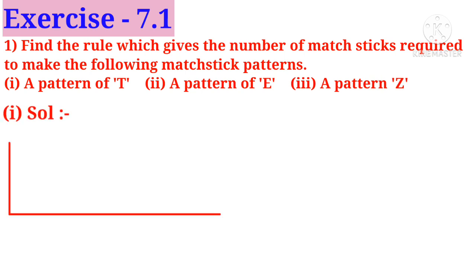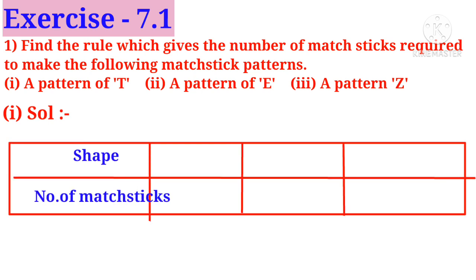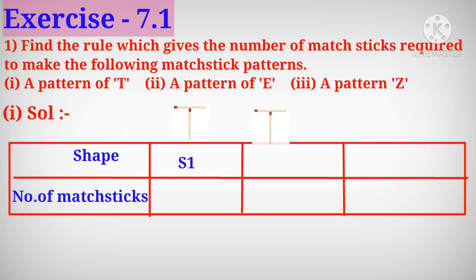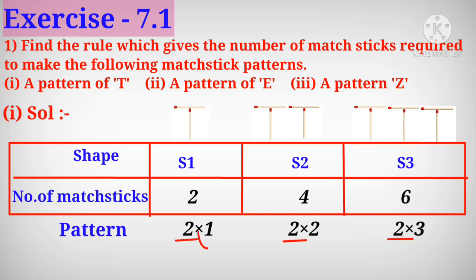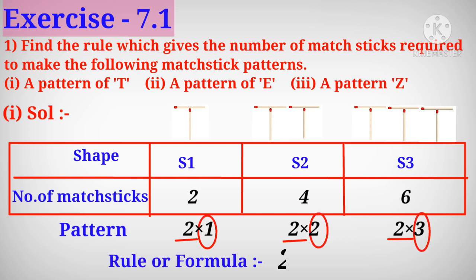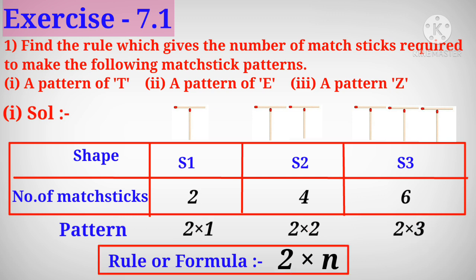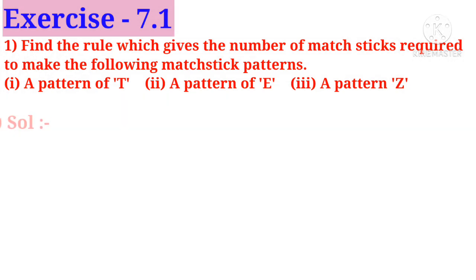First solution: take the shape and number of magic sticks. In first shape, one T is formed; in second shape, two T's; in third shape, three T's are formed from magic sticks. In first shape, two magic sticks are used; in second shape, four; in third shape, six. The pattern is: 2×1, 2×2, 2×3. The constant number is two, and the changing numbers one, two, three are replaced by a variable n. So the rule or formula is two into n.